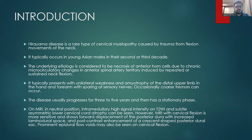On MRI in neutral position, intramedullary high signal intensity on T2-weighted images and subtle asymmetrical lower cervical cord atrophy can be seen. However, MRI with cervical flexion is more sensitive and shows forward displacement of the posterior dura with increased laminodural space and post-contrast enhancement of a crescent-shaped posterior dural sac. Prominent epidural flow voids may also be seen on cervical flexion.